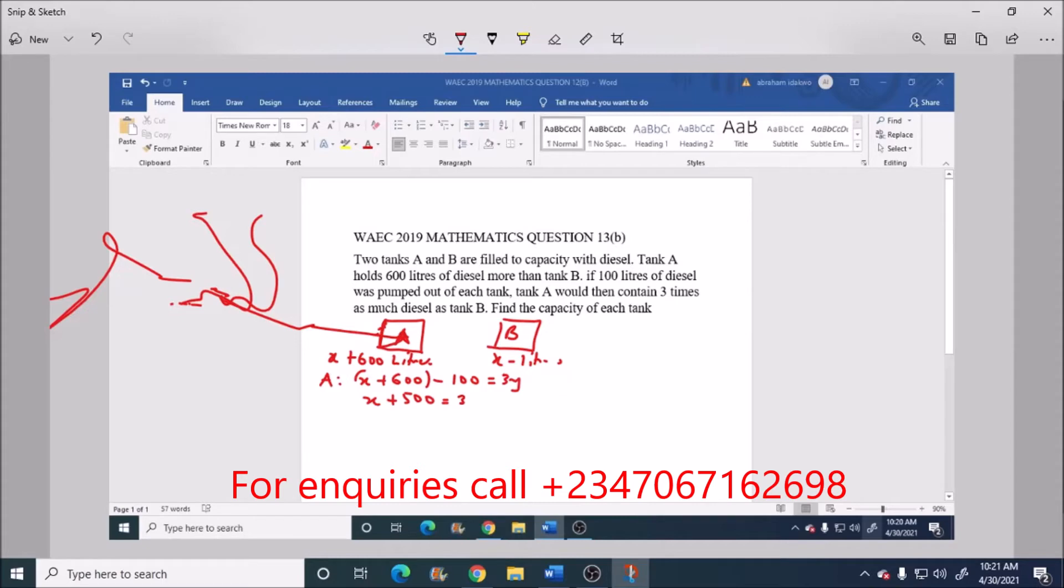And then for tank B, we have X minus 100 equals to Y. Call this one equation 2.